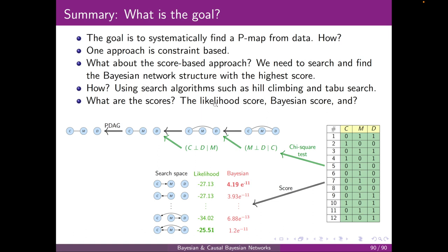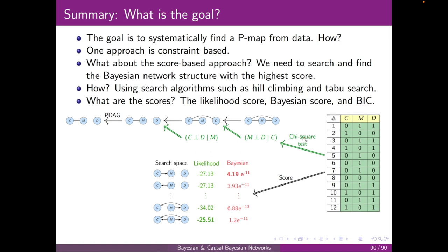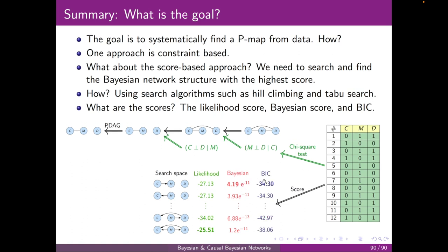Great. Back to the summary. We saw the likelihood score. We saw the Bayesian score. And now, we see the BIC score here. It just appeared that this network also was preferred by BIC. Thank you.